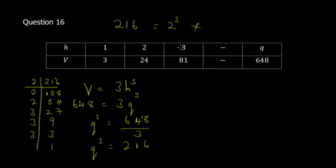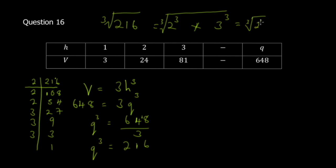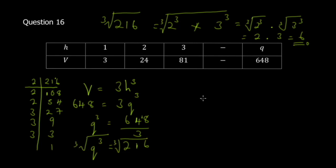To take the cube root, we group factors in threes. Cube root of 216 equals cube root of 2³ times 3³, which equals cube root of 2³ times cube root of 3³, giving 2 times 3 equals 6. You can show all this working — even attach rough paper — as you may get marks for it.